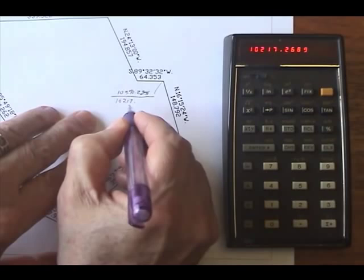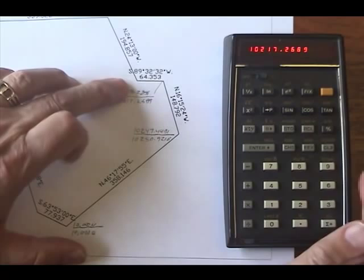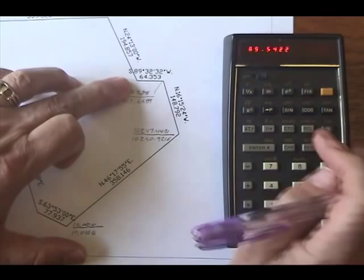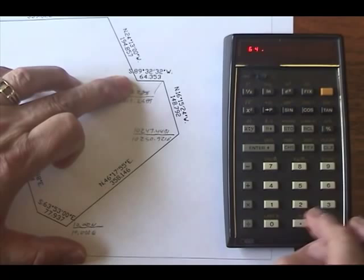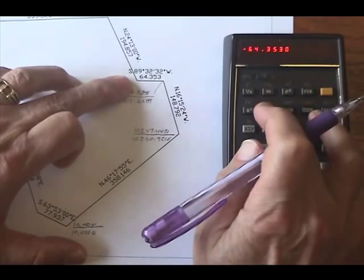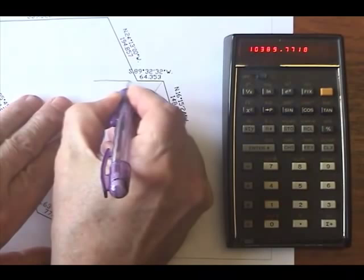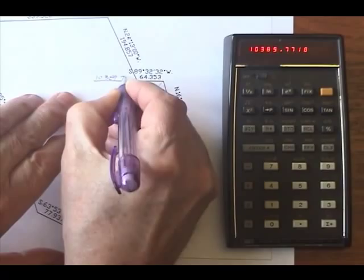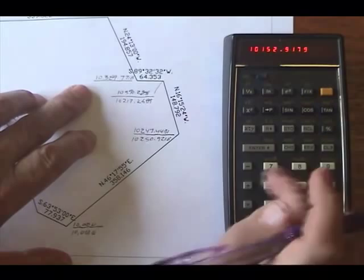Let me continue on. One more leg here. 89 degrees 32 minutes 32 seconds. Convert to decimal. It's southwest so the angle is positive. But the distance will be negative: 64.343 negative. Polar to rectangular. Summation. Recall 7: 10,389.7718. Recall 8: 10,152.9179.